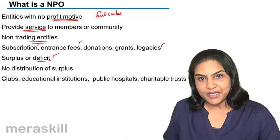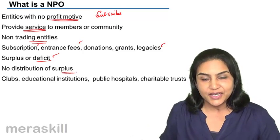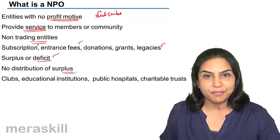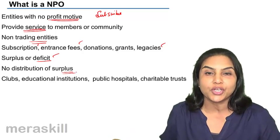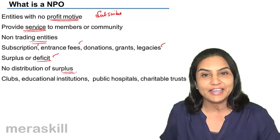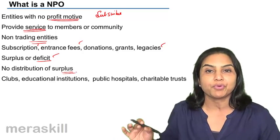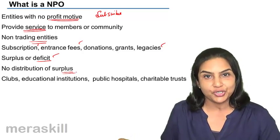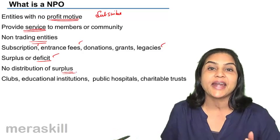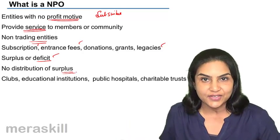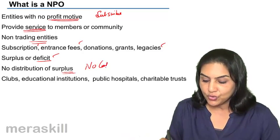If they have a surplus, there is no concept of distribution of that surplus. In a trading organization, profits are distributed — in a company they go to shareholders as dividend, in a partnership they are shared among partners in their profit-sharing ratio, and in a sole proprietorship the profit is retained by the proprietor and added to his capital. But in a not-for-profit organization, there is no capital and no dividend.